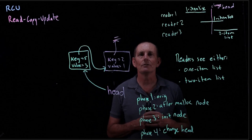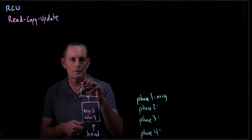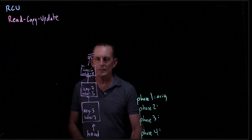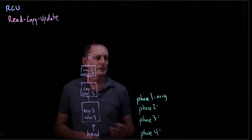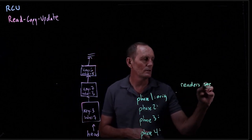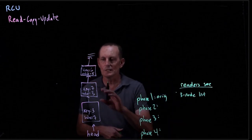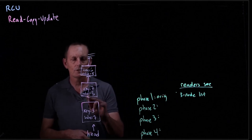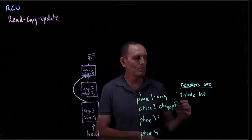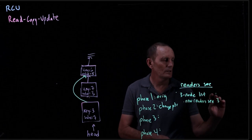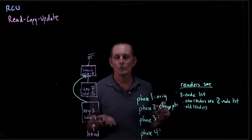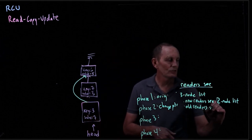Instead of inserting, let's look at an example of deleting. Let's say we are deleting the second node — we have a mutator that wants to delete it. Phase one is our original: readers see a three-node list. Now we're going to do a deletion by changing the pointer. Phase two is when we change the pointer. New readers happening in conjunction with this deletion see either a two or three-node list.